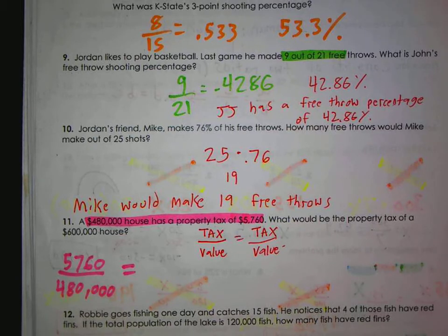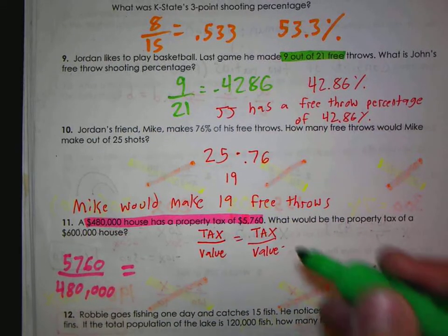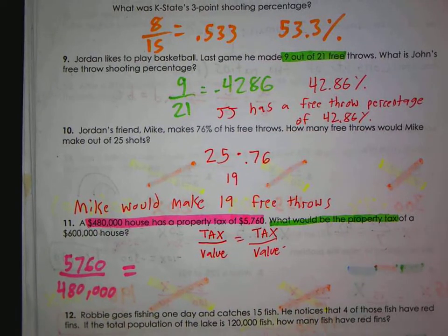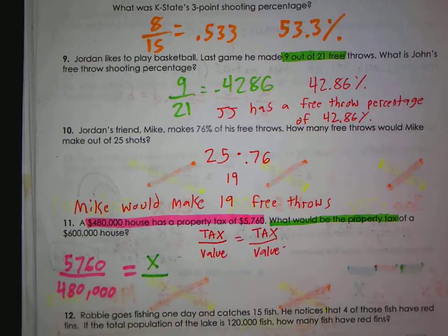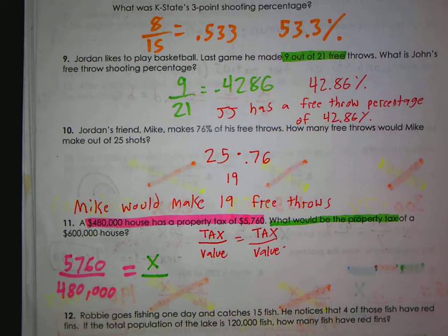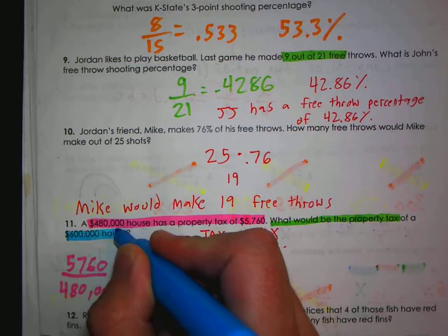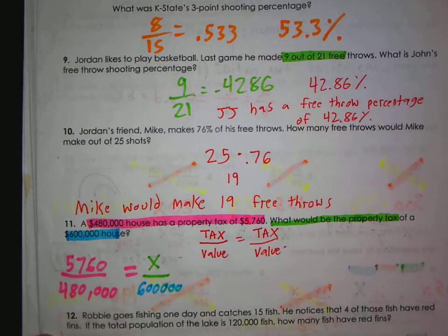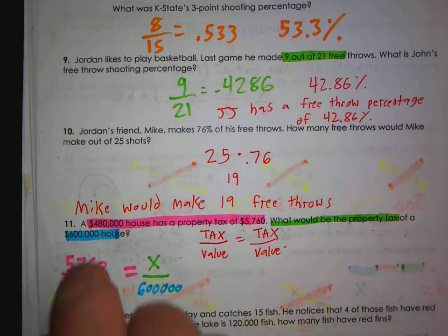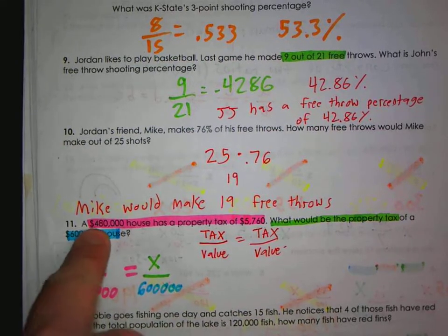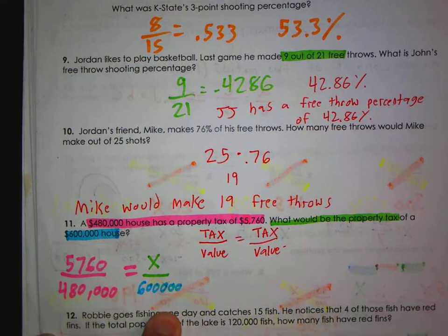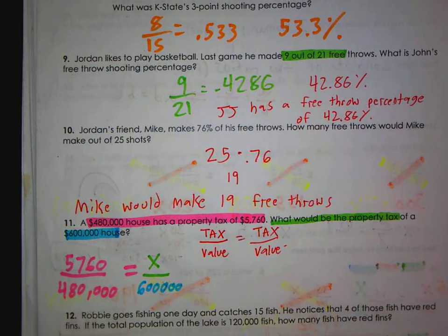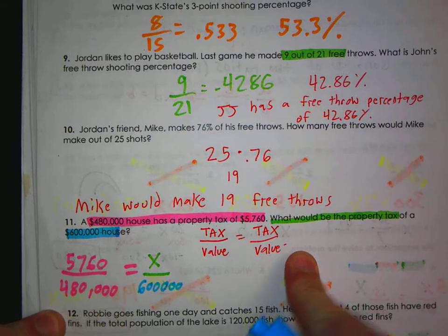Next, what would be the property tax? That would be my X. An X tax goes on top of a $600,000 house. Well, that would go down here, right? So for a $480,000 house you pay $5,760. For a $600,000 house, how much would you pay? You could have both of these flipped and you would still get the same answer. But you have to do tax over value, tax over value, or value tax, value tax.